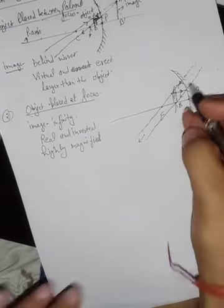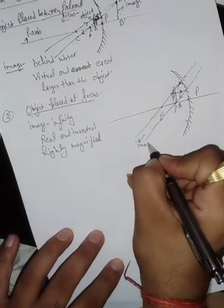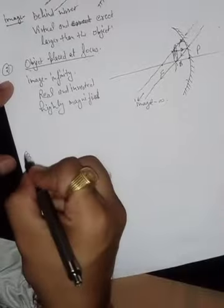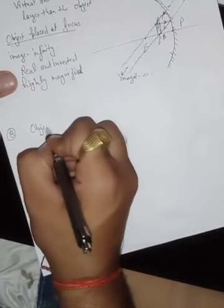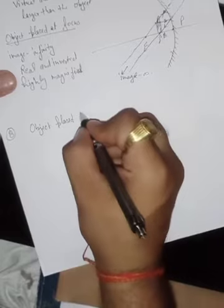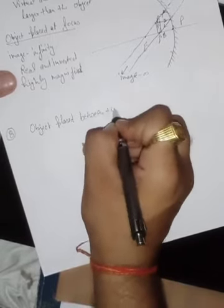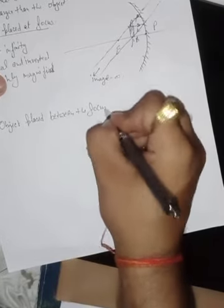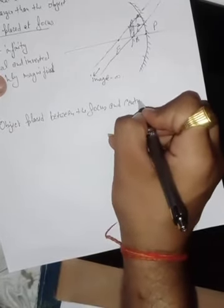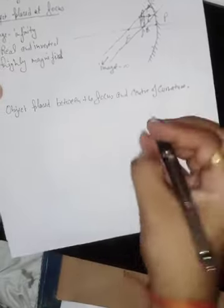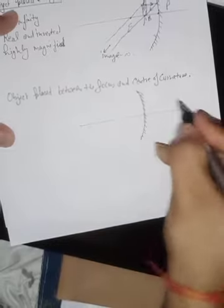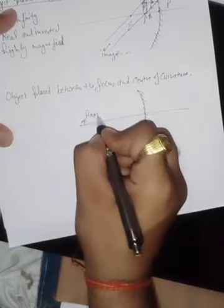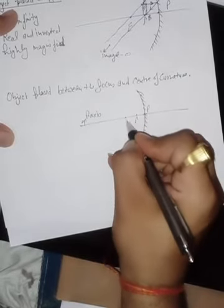So remember: when the object is placed at the focus, the image is formed at infinity. Third case: when the object is placed between the focus and center of curvature. Here is the concave mirror with principal axis, focus, and center of curvature.